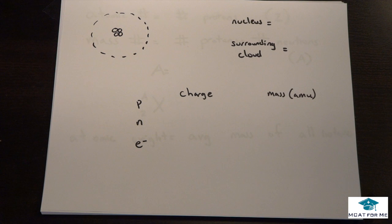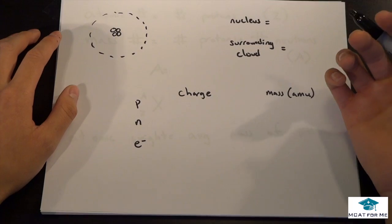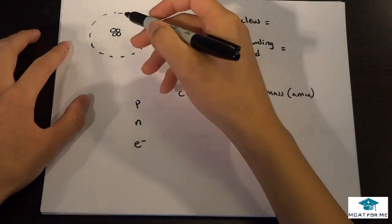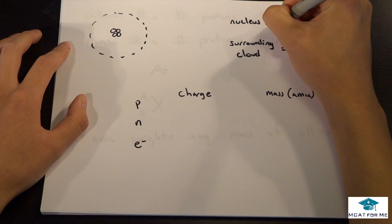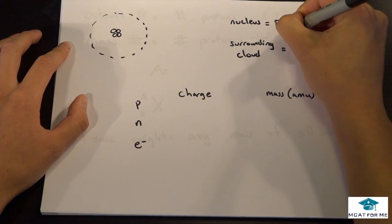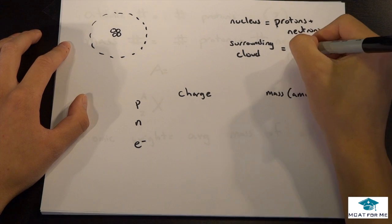Today we have an intro chemistry lecture. We're going to talk about what exactly is in the nucleus and the surrounding. In the nucleus we have protons and neutrons, and in the surrounding cloud we have electrons.